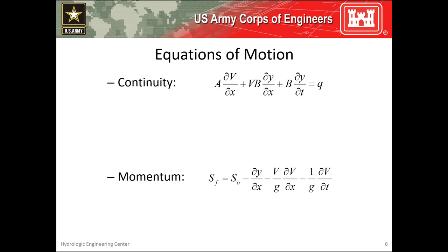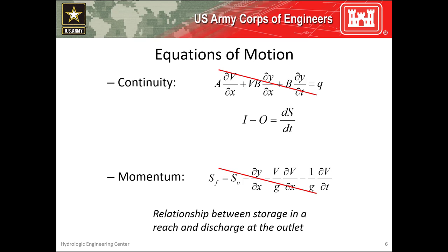The Muskingum method starts by simplifying the continuity equation to inflow minus outflow equals change in storage over time. The momentum equation is replaced with a relationship relating storage in the reach and discharge at the outlet. These simplifications make the method simple to parameterize and solve, but they also limit its applicability. In particular, attenuation is handled numerically and isn't related to any physically measurable characteristics of the reach, and because the momentum equation is replaced, this method cannot simulate backwater effects. Also, this method is best applied to steep streams with slopes greater than 2 feet per mile and slowly rising hydrographs.